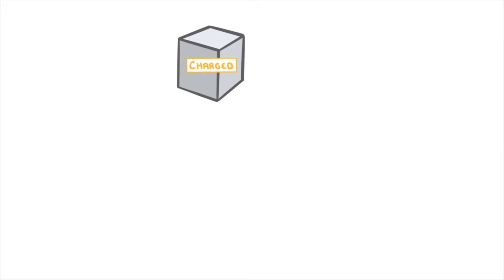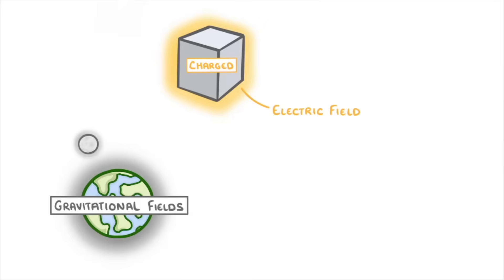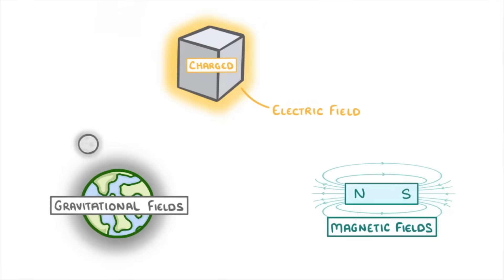If you imagine any charged object, it will always have its own electric field all the way around it, just like masses have gravitational fields and magnets have magnetic fields.